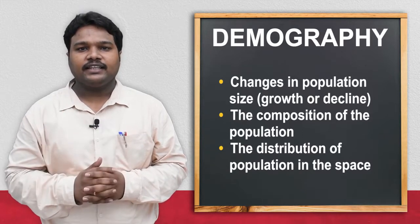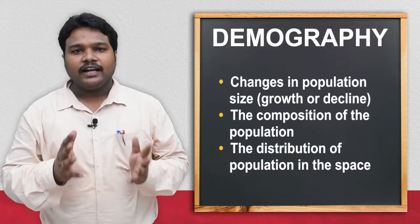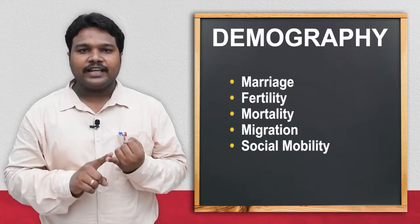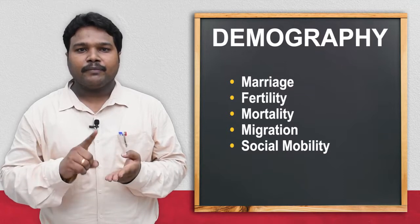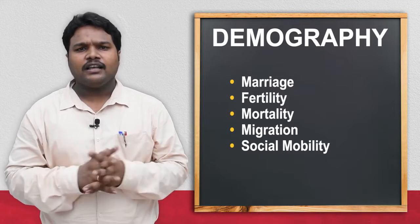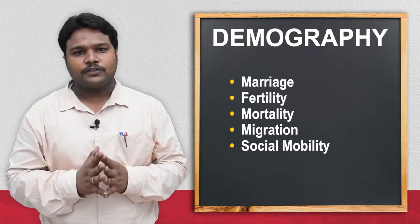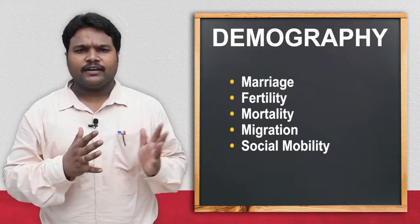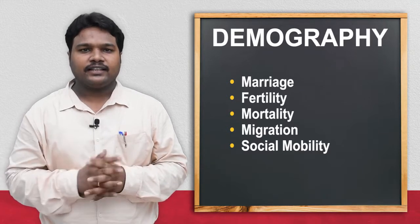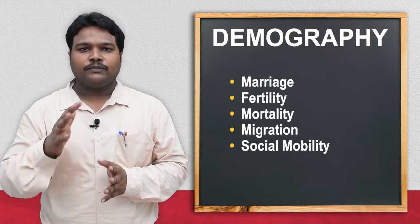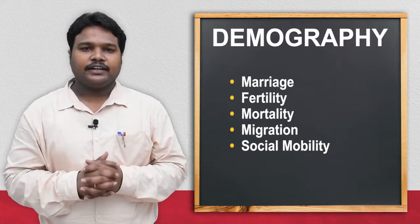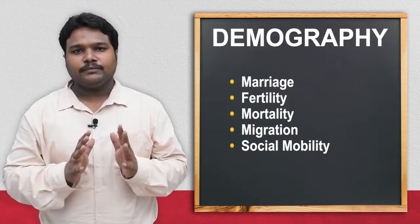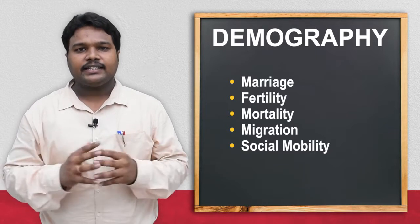Demography also deals with five important processes that happen in every life: marriage, fertility, mortality, migration, and social mobility. After marriage, individuals produce offspring — that is fertility. Then it leads to mortality, as death follows birth at some point. People also move from one place to another as per their requirements — that is migration and social mobility.